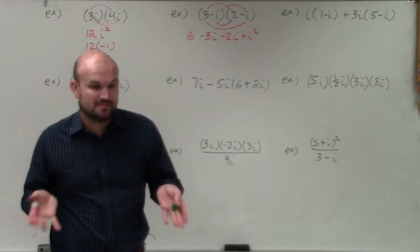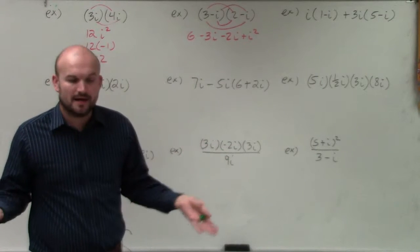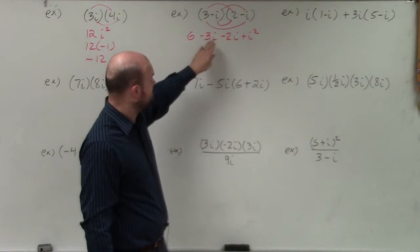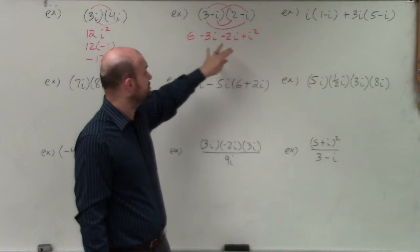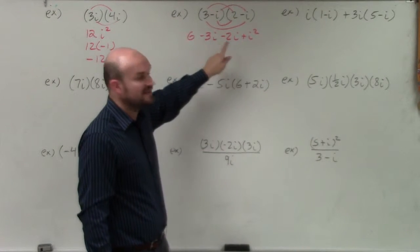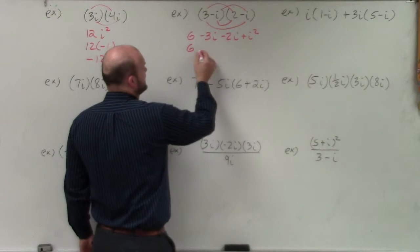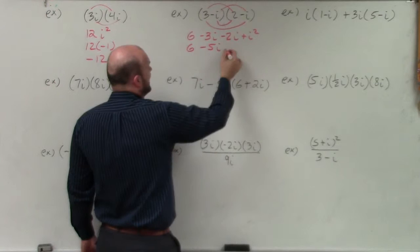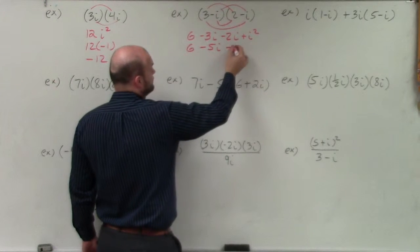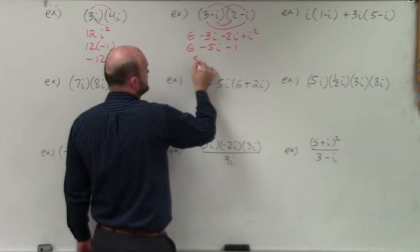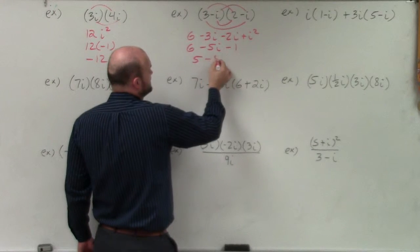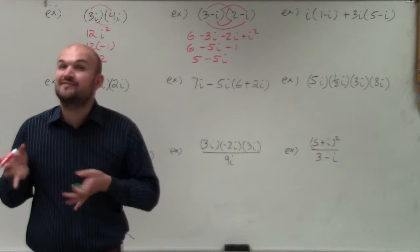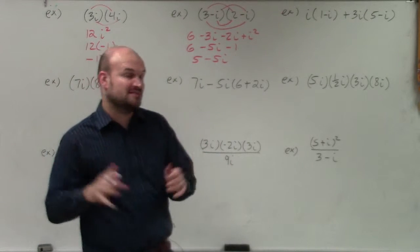Now remember, we can combine our terms. Just like when we're adding and subtracting variables, we can add and subtract our complex numbers — just make sure you apply the operation to the coefficient and keep i in there. So I have 6, negative 3i minus 2i is negative 5i, and i squared is negative 1. Therefore, my final answer is going to be 5 minus 5i.